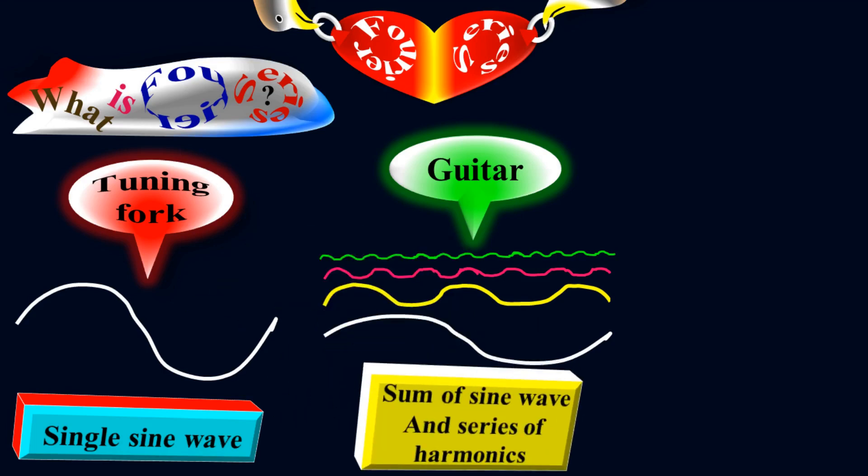When you compare these two things, the tuning fork produces a single sinusoidal wave, but the guitar produces a sinusoidal wave plus a series of harmonics as well.